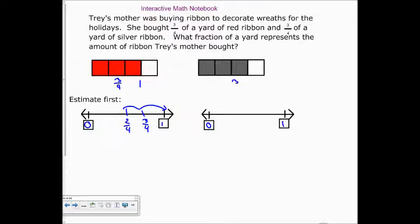Alright, again here, we've got three-fourths. There would be two-fourths, one-half. There's three-fourths. Again, to one. So really, about how much ribbon should she have? One plus one equals two.